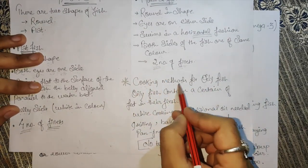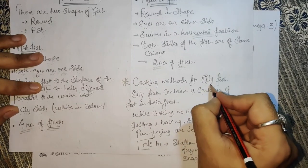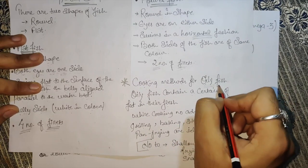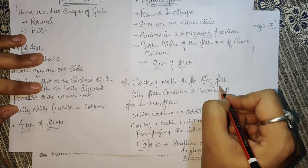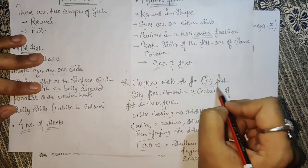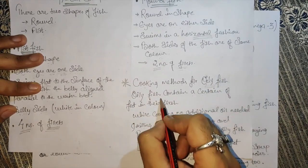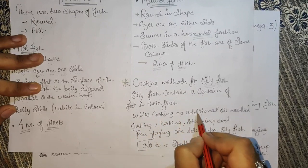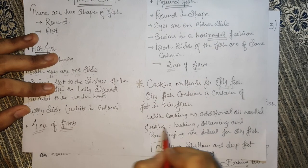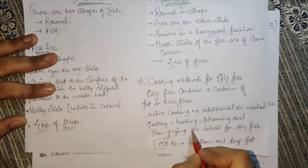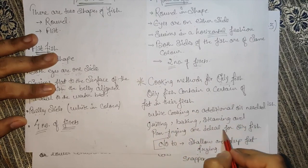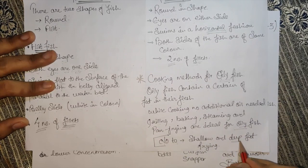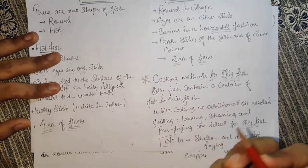Now let's see oily fish and the cooking method for oily fish. We would not deep fry or shallow fry oily fish. We cook it with less oil — if necessary you can use it, otherwise no additional oil is needed to cook this fish. Oily fish contains a certain amount of fat in their flesh, so while cooking, no additional oil is needed. Grilling, baking, steaming, and pan frying are ideal for oily fish. No shallow or deep fat frying — because oil is already present in the fish, why add more?